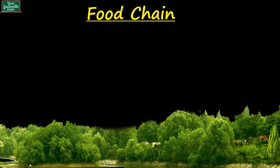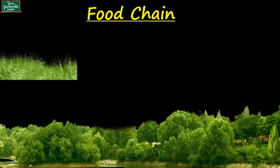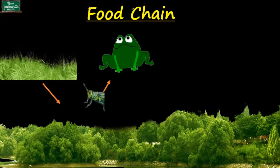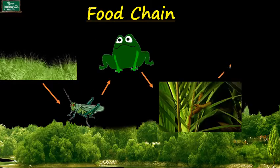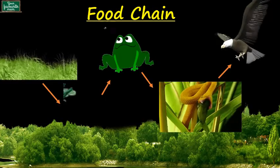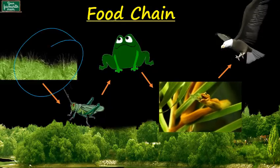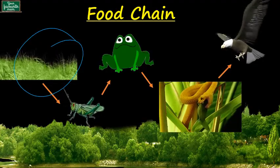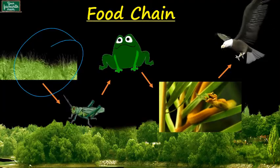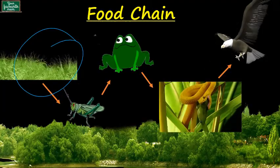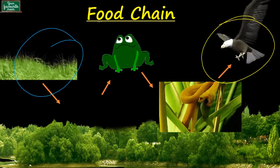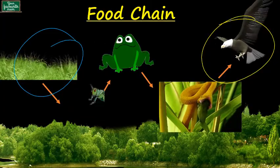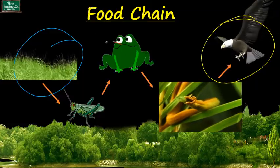Now let's talk about another food chain found in our forest, which starts with grass. Grass is eaten by a grasshopper, which is eaten by a toad. The toad is eaten by a snake and a snake is eaten by a hawk. A food chain always starts with a green plant — that is, producers — which is eaten by an animal. So all the animals in the food chain are consumers. A food chain will always end with a predator, who is always at the top of the food chain. The sun is very important for all living things — without the sun, the plants would not grow, and without plants, there would be no animals.